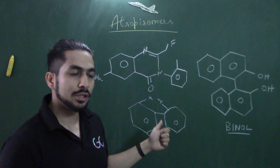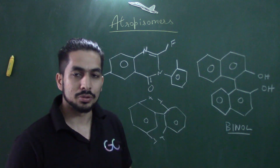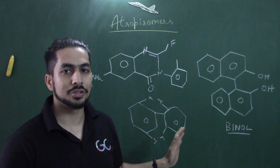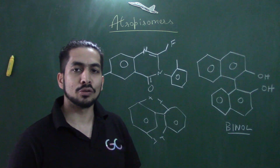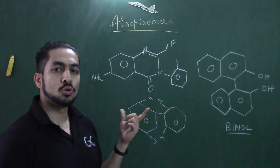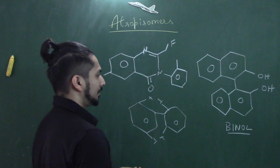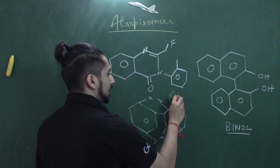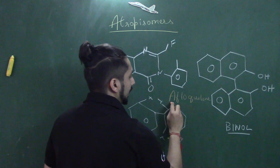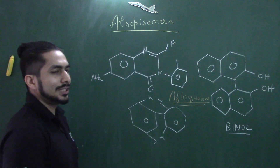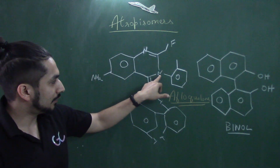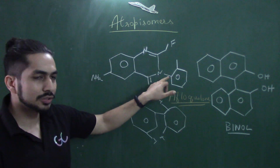So biphenyl systems also come under atropisomers, because chirality is generated due to hindered rotation around the carbon-carbon single bond. Wherever there is hindered rotation around a carbon-carbon single bond, atropisomers are generated. Now, let's say this is a drug molecule called aflocolon — it's a sedative and a muscle relaxant.